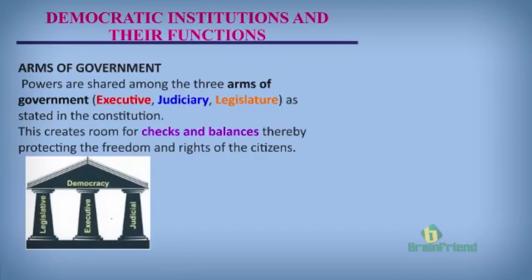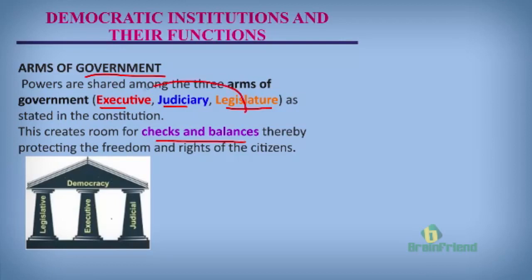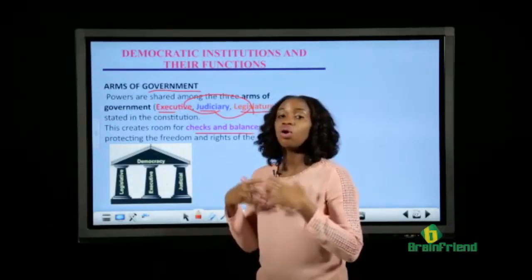Another democratic institution that helps strengthen democracy are the arms of government. The different arms are the executive, the judiciary, and the legislature. Powers are shared among these different arms, and in performing their different duties they are able to promote democracy. Sharing of powers promotes checks and balances — the legislature can check the excesses of the executive, and the judiciary can check the excesses of the executive and the legislature too. They check themselves to make sure they are not exceeding their boundaries, and this way they protect the freedoms and rights of the citizens.